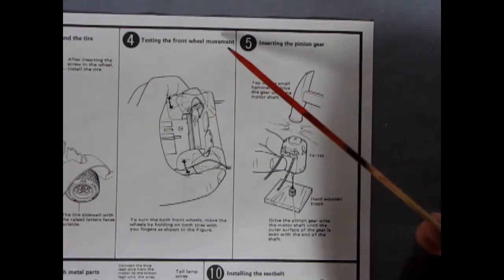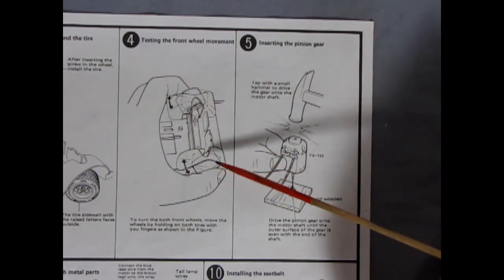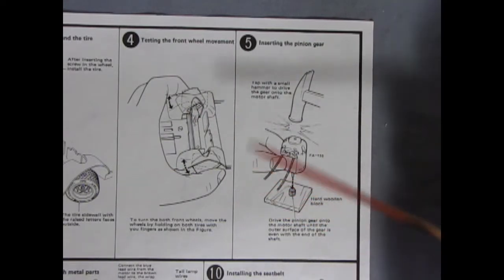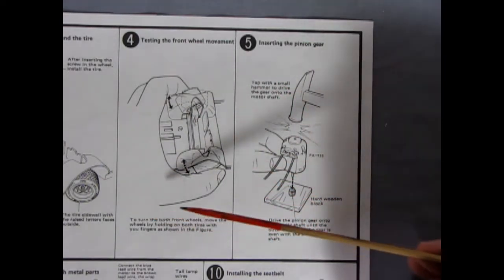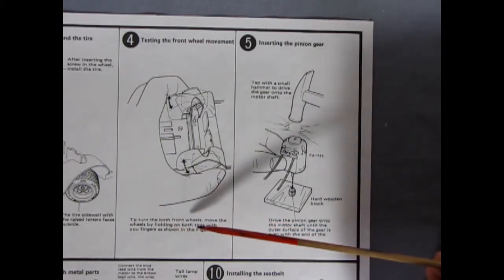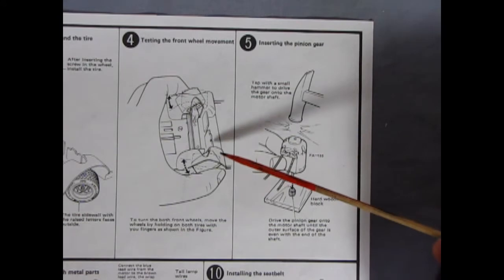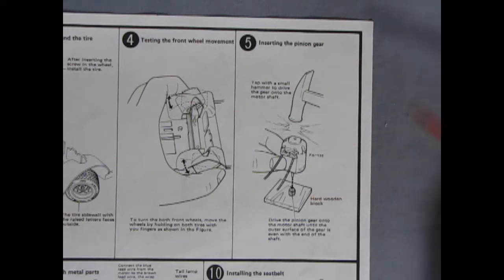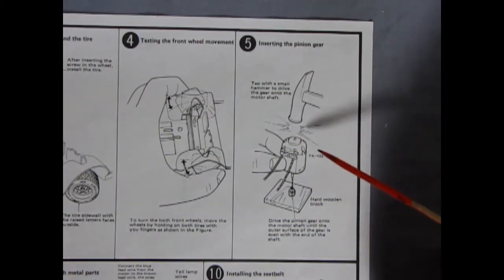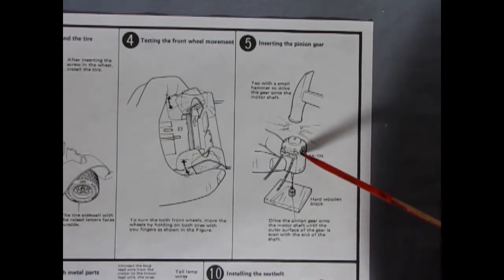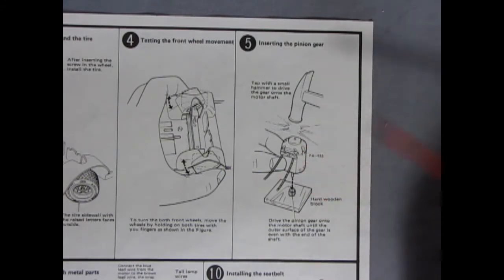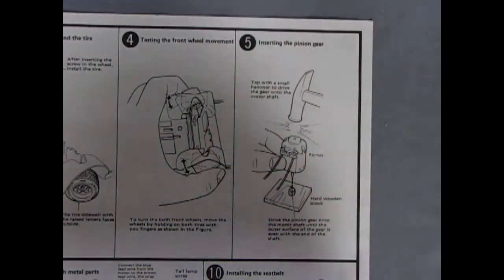So panel 4 has testing the front wheel movement which is really nice. And it shows your hand going on here and your thumbs on finger on the wheels and the direction it moves. The translation in English is a little rough but it says to turn the both front wheels move the wheels by holding on both tires with your fingers as shown in the figure. Now here you have to install the pinion gear onto your engine. And again we're using the FA-130 CAN motor which is I think a 1.5 to 3 volt engine and it shows it tapping it in on there. But be careful again don't tap hard on the spindle because you don't want to push this through.